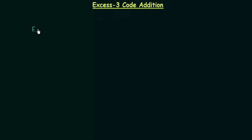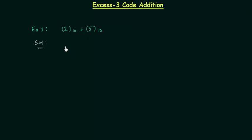I will start this presentation with one example. In the first example we will perform the addition 2 plus 5. I will use this example to explain XS3 code addition. First we need to convert 2 and 5 to their respective BCD codes. BCD code for 2 is 0010, and BCD code for 5 is 0101.